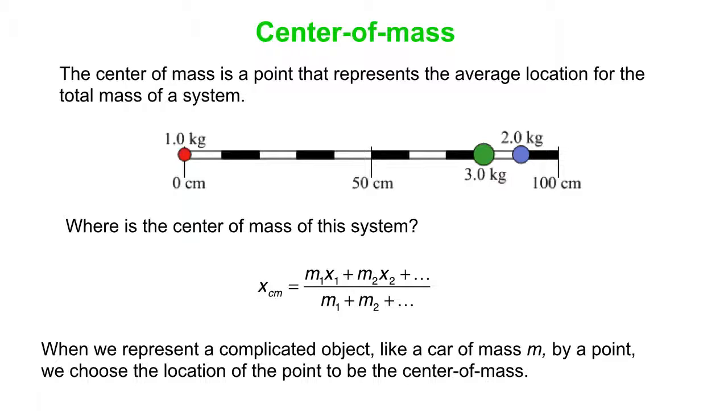the motion of the center of mass does one thing, the motion of the red object at the end of the stick does something different and more complicated.